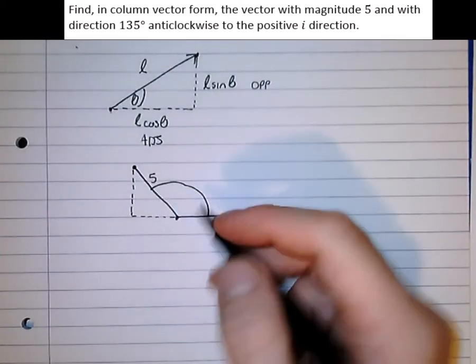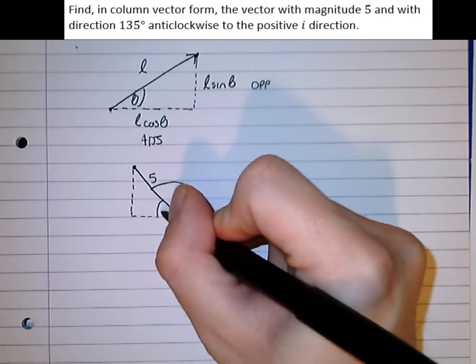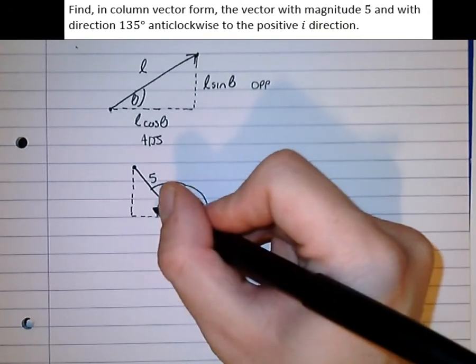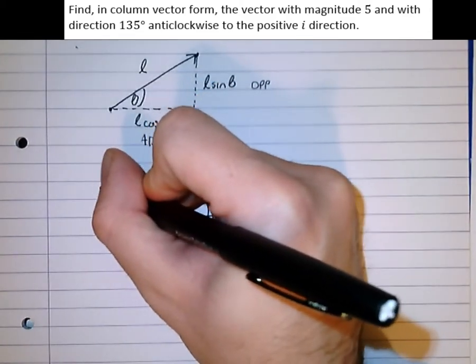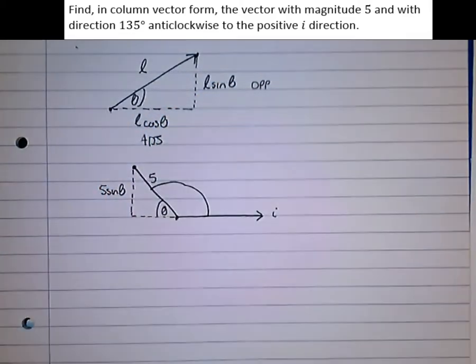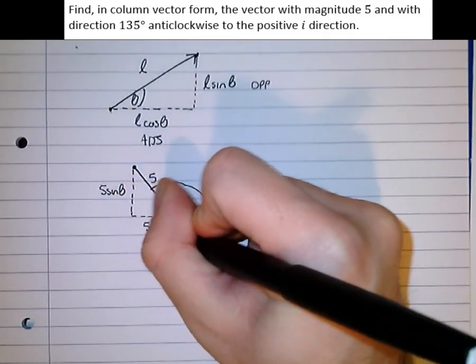What we need to do now is split this into its horizontal components. So if we take this to be our angle, the opposite is going to be 5 sine theta, and the adjacent is going to be 5 cos theta.